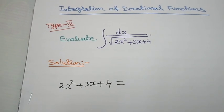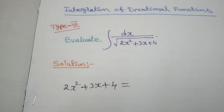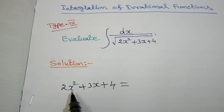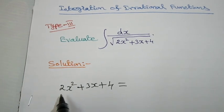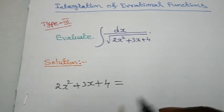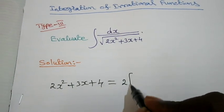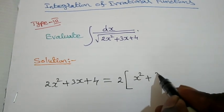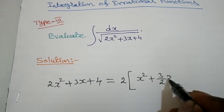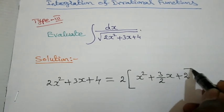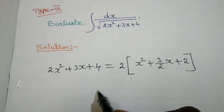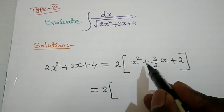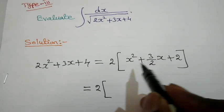To apply the perfect square formula, the coefficient of x squared must be 1. So I am going to take 2 outside. This becomes x squared plus 3 by 2x plus 2.